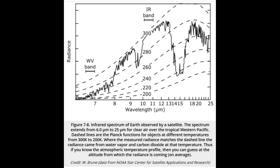Let's examine the wavelength spectrum of radiance observed by a satellite looking down at a location on Earth. Because the absorptivity and thus emissivity of different gases changes dramatically from 6 to 25 microns, the satellite is observing radiance from different types of matter at different wavelengths.